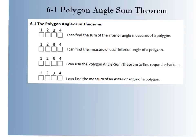Here are our learning objectives for section 6-1: Polygon Angle Sum Theorem. We have four different objectives. First, you can find the sum of interior angle measures. Second, you can find the measure of each interior angle — not just all of them, but just one. Third, you can use the Polygon Angle Sum Theorem to find requested values, which gets into algebra. And last, you can find measures of an exterior angle.